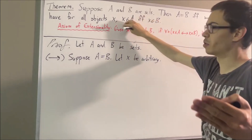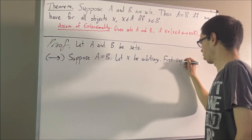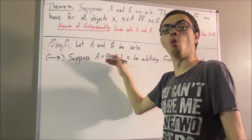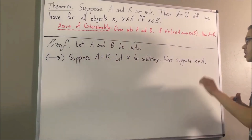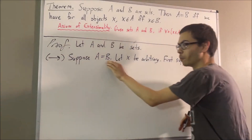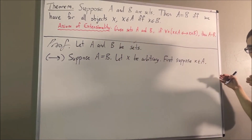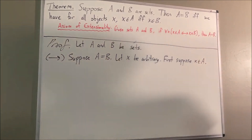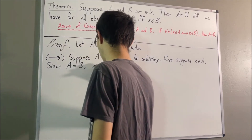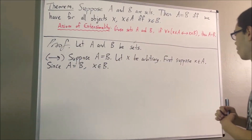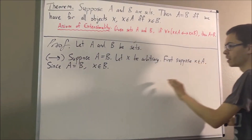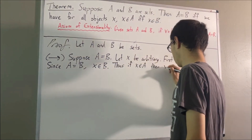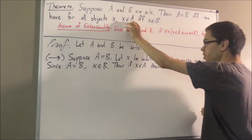To do so, suppose X is an element of A. Now, since A is equal to B, what we're allowed to do is substitute A for B. Substitution is one of the properties of equality, so we're allowed to do that. So what have we done here? We have shown if X is an element of A, then X is an element of B.